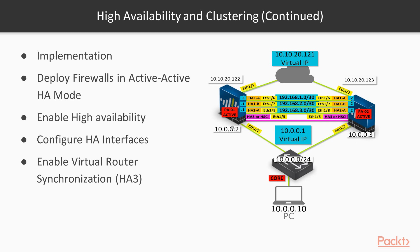Another way we can do this is using floating IPs. The difference between virtual IPs and floating IPs is that with a virtual IP using ARP load sharing, both units can receive inbound ARPs and both units are actually active. If we use floating IPs with Active-Active, the floating IP will be bound to a particular Palo Alto. It's not until that fails over to the other firewall that the floating IP will move. So the floating IP will basically attach to one unit, even though we have Active-Active.